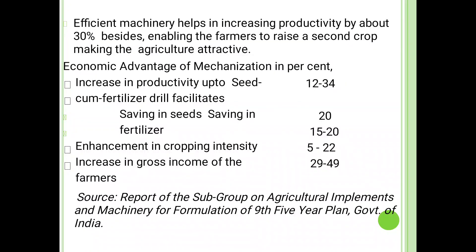Economical advantages of mechanization in percent: increase in productivity up to 12 to 30%. Seed-cum-fertilizer drill facilitates saving in seed up to 20%. Fertilizer saving 15 to 20%. Enhancement in cropping intensity 5 to 22%. Increase in gross income of farmers 29 to 49%.